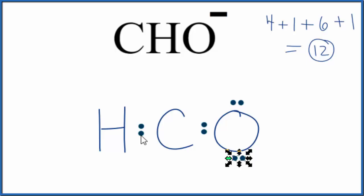Let's complete the octet on the oxygen atom here. So at this point, we used 8, 10, and we have two more. We'll put those on the central carbon.